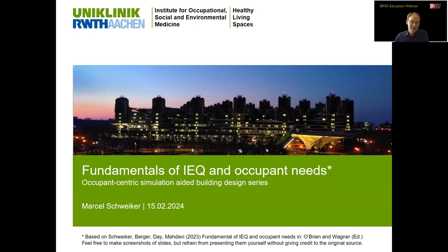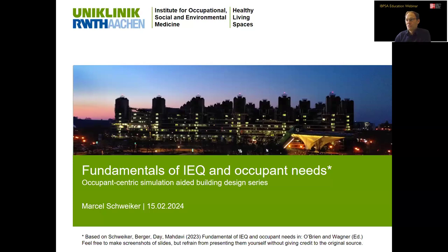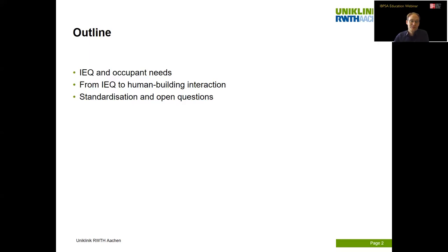I'm not the only author of this chapter. It was written together with Christiana Berger, Julia Day, and Adeshi Madabi. This presentation is structured into three parts: first, indoor environmental quality and occupant needs; then, how we go from IEQ to human-building interaction and which factors influence that; and then an outlook on how this knowledge is implemented into standardization, plus some open questions raised as a starting point for the whole book.